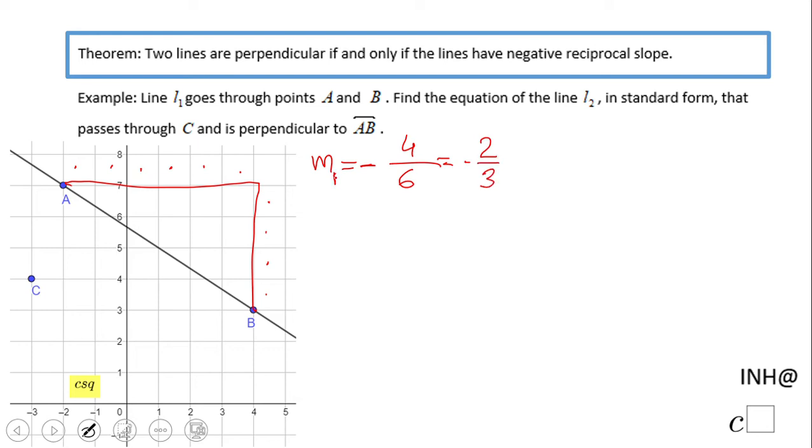And I'm going to call this one M1, because this is first line, L1. We're looking for a second line. And the slope of the second line is negative reciprocal. So what does it mean for us? This is negative 2 thirds. So if it's negative, then it's going to be positive, the opposite. And the reciprocal of 2 thirds is 3 halves. So the slope of the second line is 3 halves.